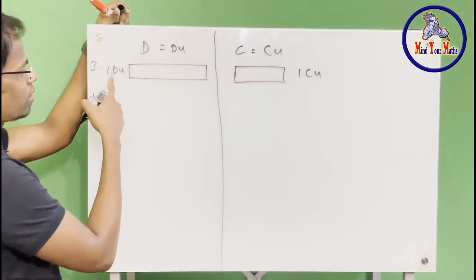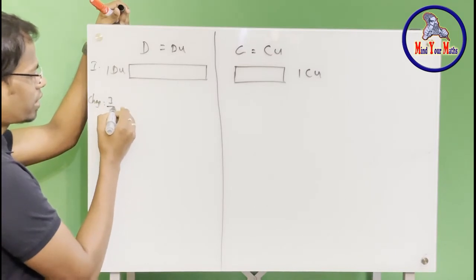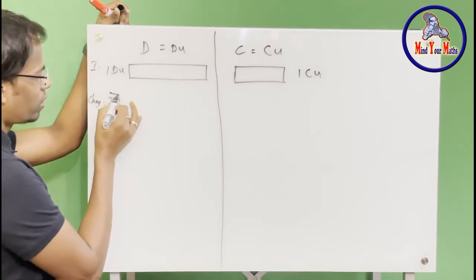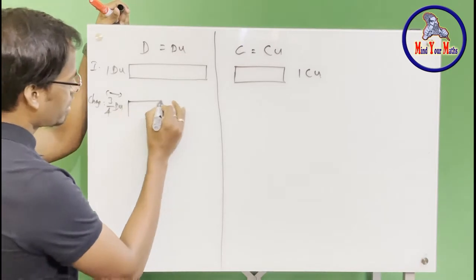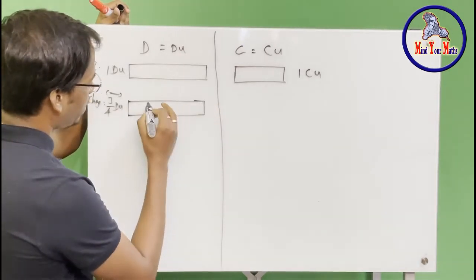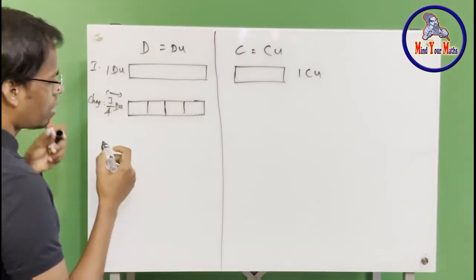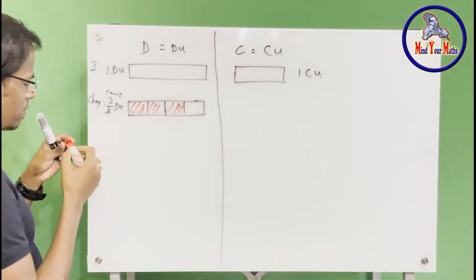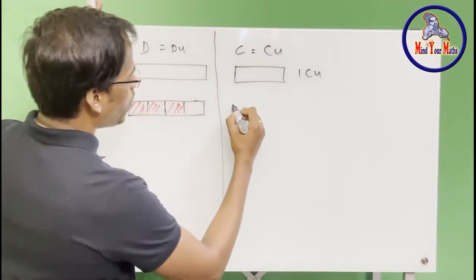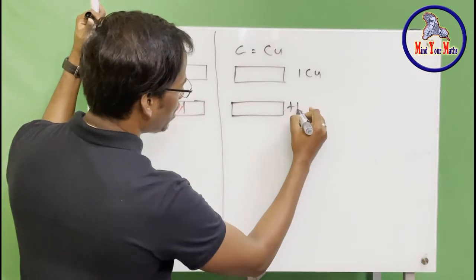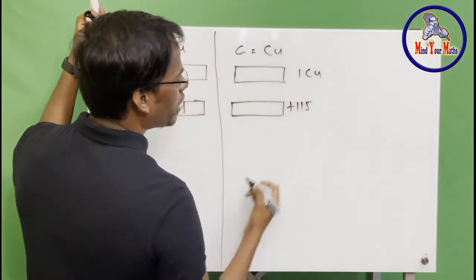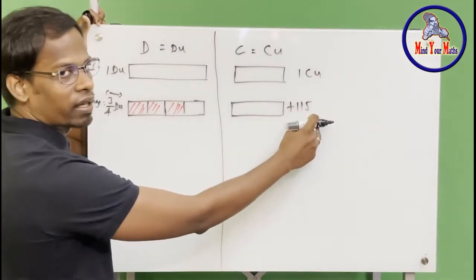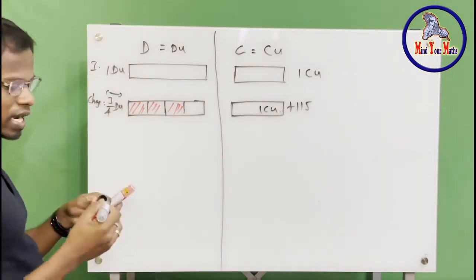Now there was a change. From the one duck unit, he sold three-fourths of it. So we split the duck unit into four parts and sold off three of those parts. On the chicken side, he already had one chicken unit and then bought an additional 115 chickens. That 115 is the actual number of chickens, not units, which is why we can't use chicken units for that part — the original amount is still one chicken unit.